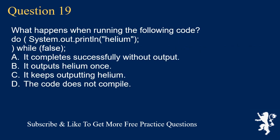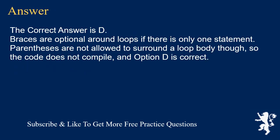Question 19. What happens when running the following code? do (System.out.println("helium")) while (false); A. It completes successfully without output. B. It outputs helium once. C. It keeps outputting helium. D. The code does not compile. The correct answer is D. Braces are optional around loops if there is only one statement. Parentheses are not allowed to surround a loop body though, so the code does not compile, and option D is correct.